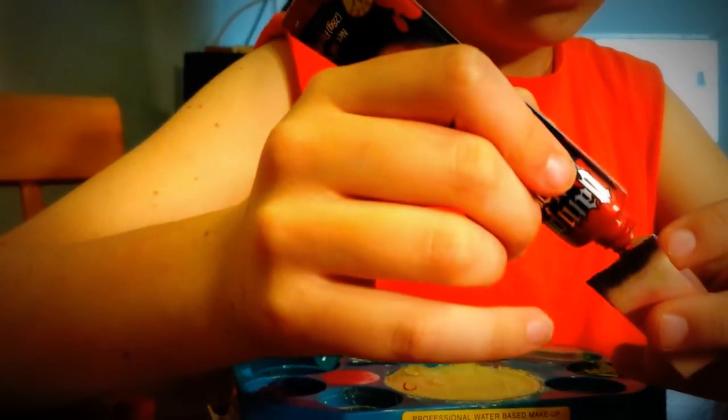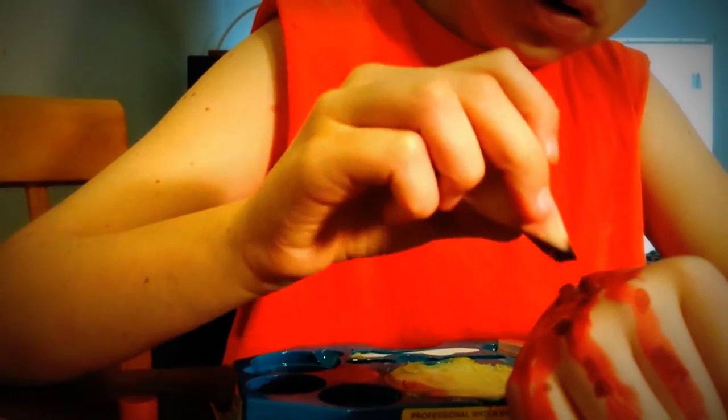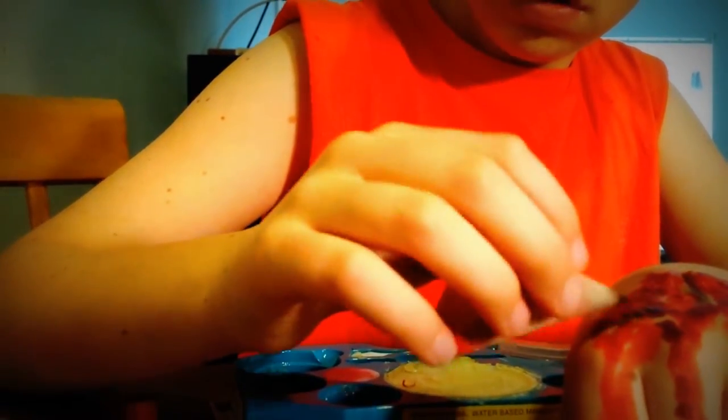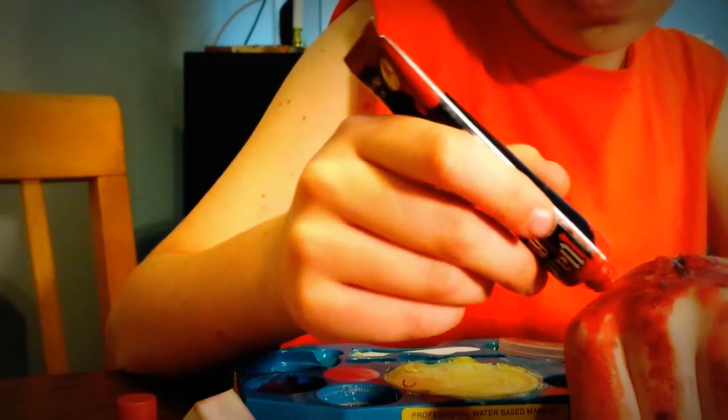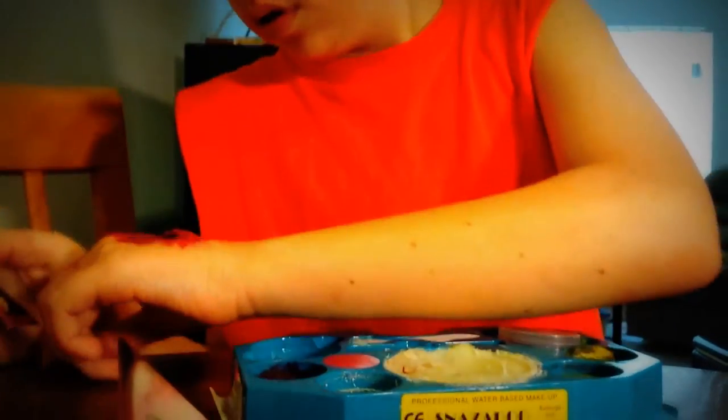Now we're going to add some fake blood to the wound in the middle. Okay, just like this. Now what I do is I just kind of let it slowly drip out, and just like this. Here's what you're going to do.